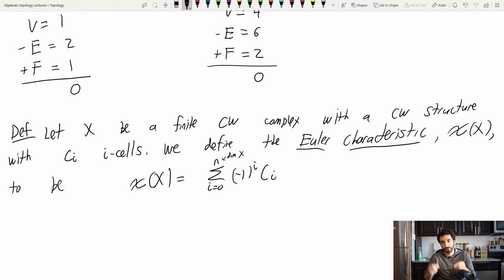In general, what I do is add up zero cells, subtract one cells, add two cells, subtract three cells, add four cells, and so on and so forth, until I get to the dimension of X, and then there's no more cells to add up. So that's the definition in general.